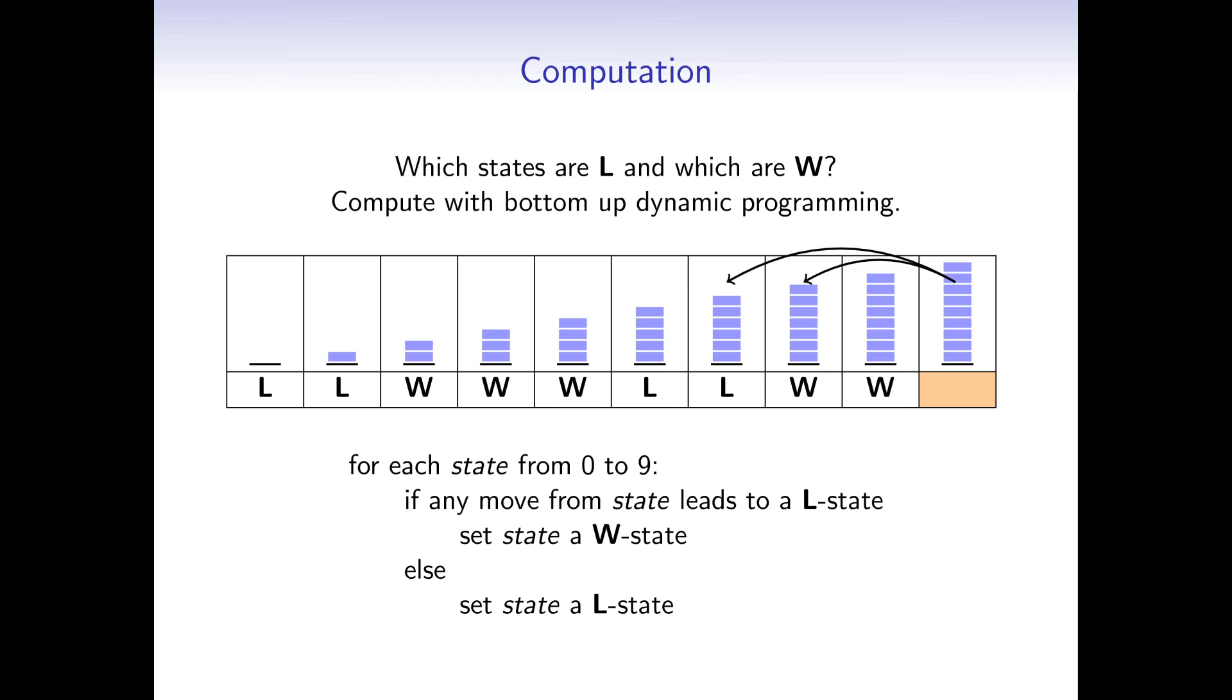Notice that there is a pattern in the sequence of winning and losing states. There are 2 losing states, followed by 3 winning states, and this pattern will repeat. So the losing states are the states that yield 0 or 1 as a remainder of the division, number of blocks divided by 5.